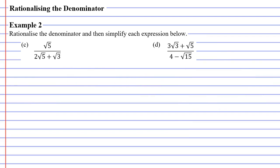Let's now move on to questions C and D. Once again, we're looking to rationalize the denominator. Looking at question C, we have two terms that are added together. We need to multiply this by the same two terms — 2 root 5 and root 3 — except this time we're subtracting them. The numerator also needs to be multiplied by the same expression: 2 root 5 minus root 3.